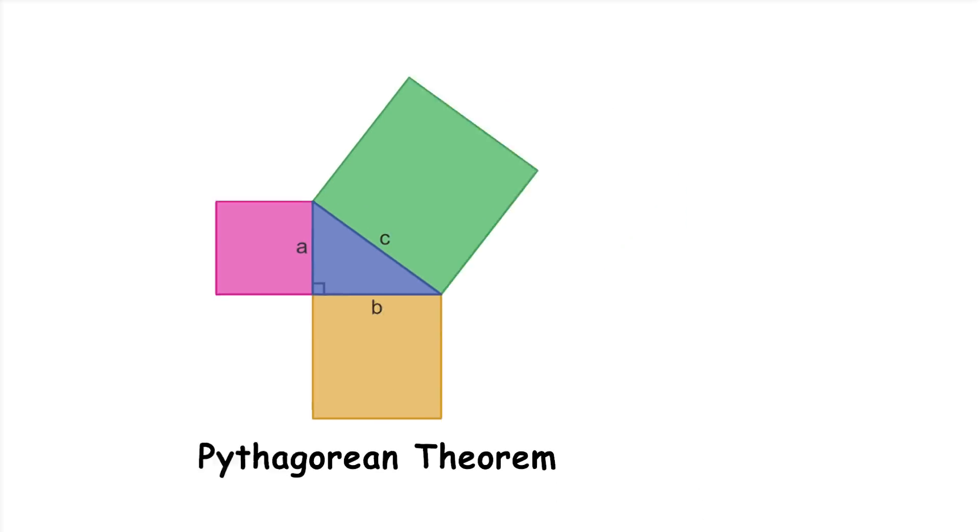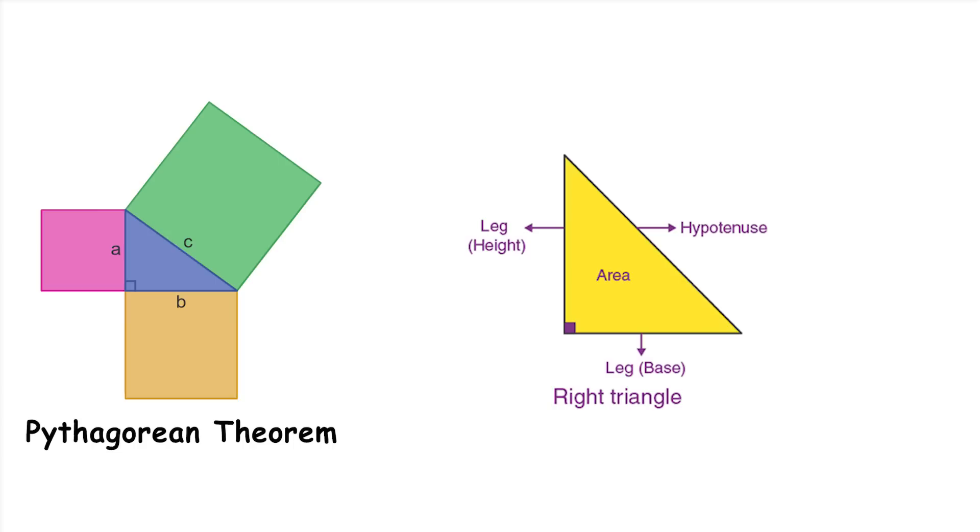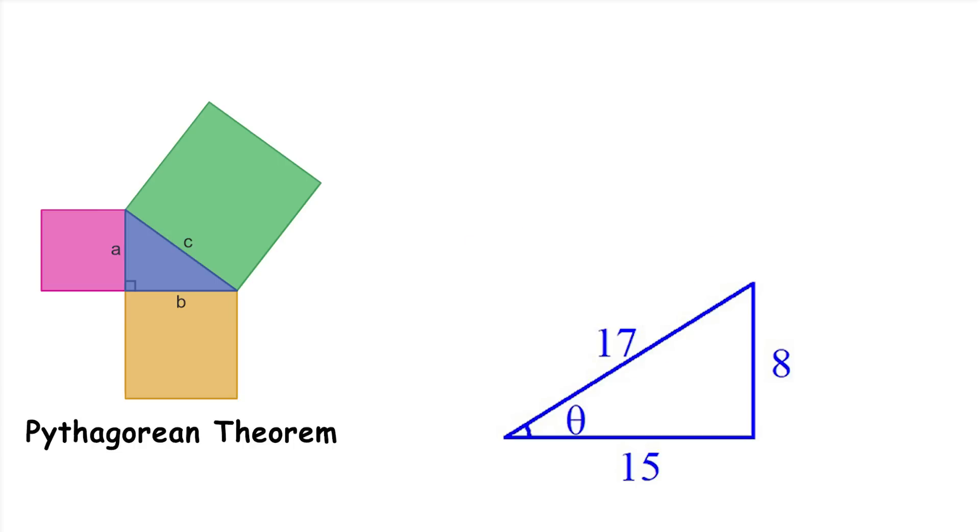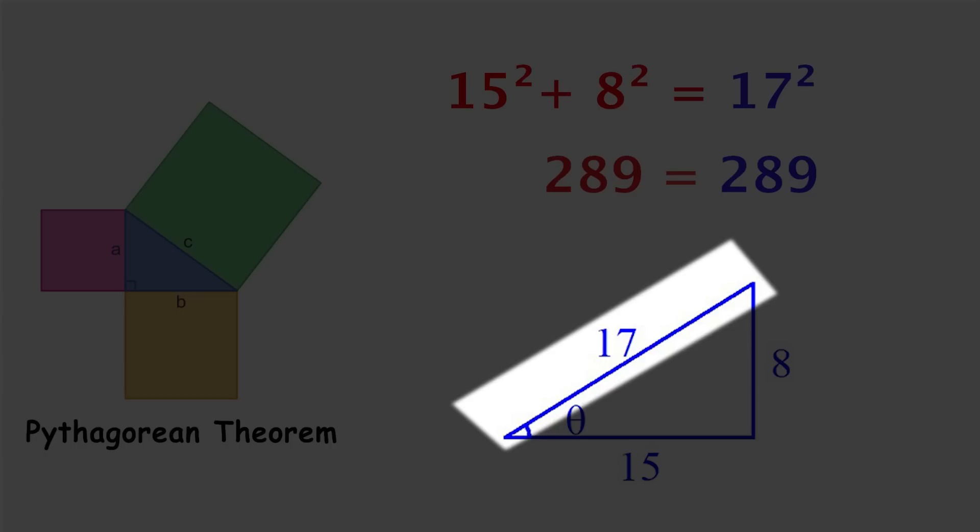Pythagorean theorem. This theorem is about right-angled triangles, which have one angle that is exactly 90 degrees. It states that if you take the lengths of the two shorter sides of the triangle, called the legs, and square them, multiply each by itself, then add those two numbers together, you get the same result as if you took the length of the longest side, the hypotenuse, and squared it.